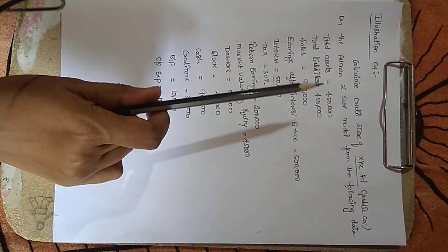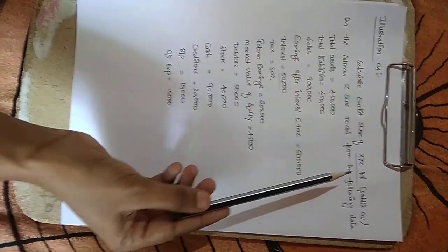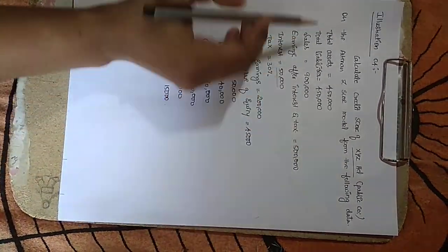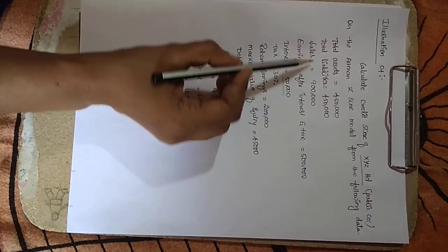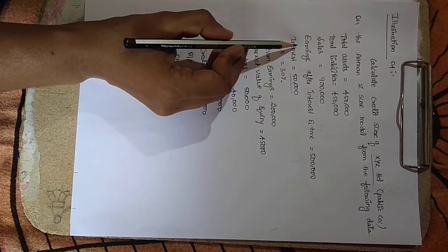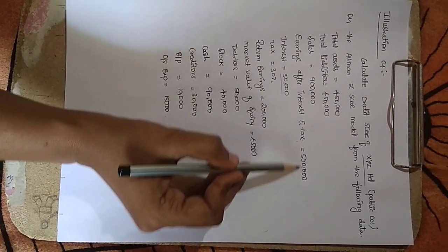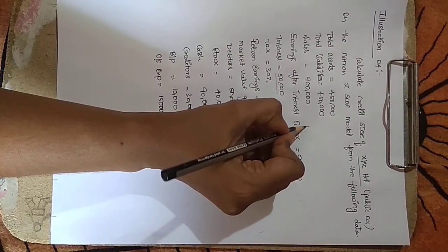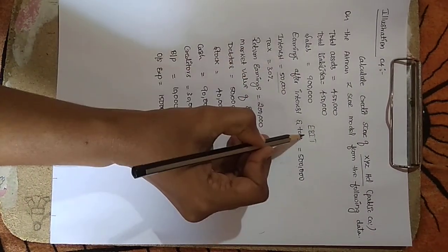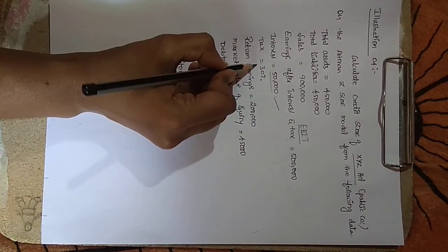Good morning everyone. In this lecture we will discuss an illustration on the Altman Z-Score model. The question gives a public company with the following information: total assets is 4,50,000; total liabilities is 4,50,000; sales is 9,00,000 rupees; and earnings after interest and tax is 5 lakhs. Since we need earnings before interest and tax, the interest amount and tax rate are also given separately.